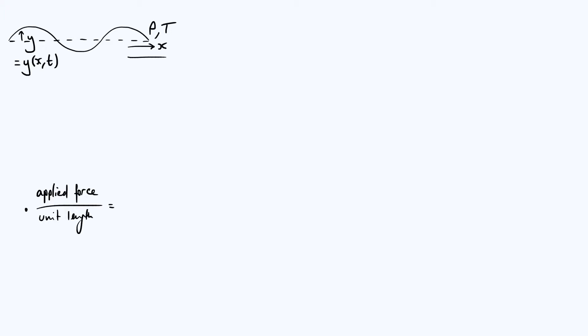We're also going to allow for the possible application of external forces to the string. That could be something as simple as gravity, or it could be something more complicated, like a force applied by a vibration generator at one end of the string or something like that. But in general, we're going to parameterize it as an applied force per unit length of capital F, and that can be a function of both x and time t. Because I'm defining this to be a force per unit length, that could have units of newtons per meter, for example.